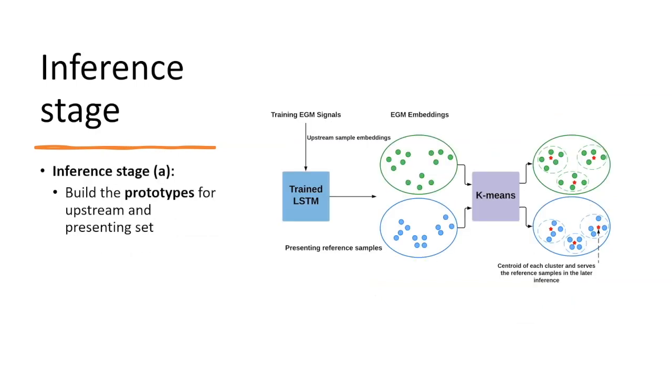In the inference stage, we analyze the EGM signals in two phases. In the first phase, we use the K-means method on the training embeddings to create prototypes for the upstream and presenting classes respectively. These prototypes then serve as the support set in the few-shot learning of the second phase.